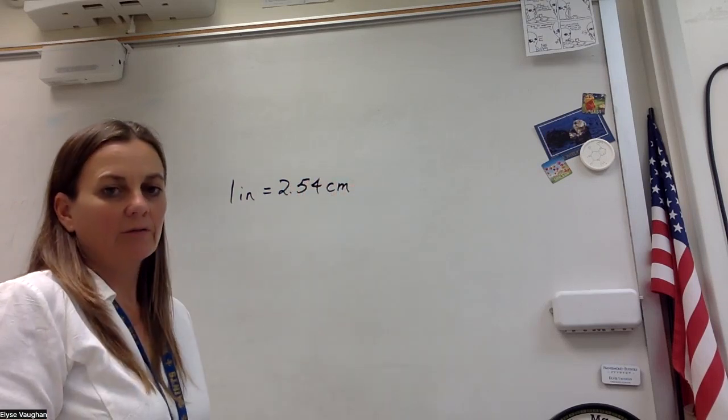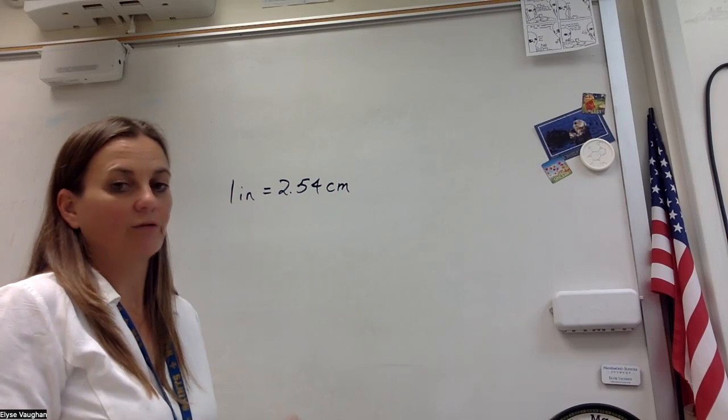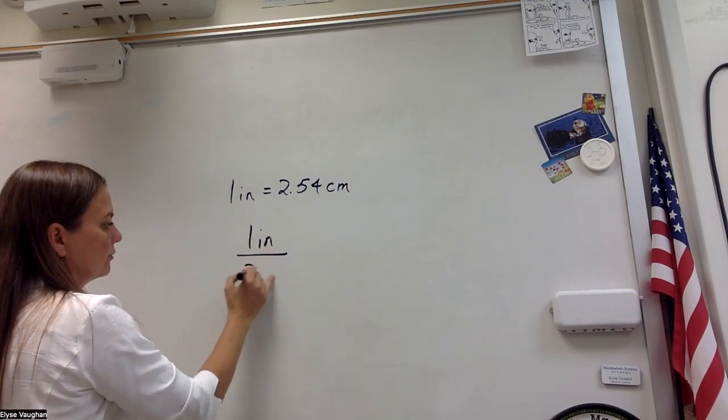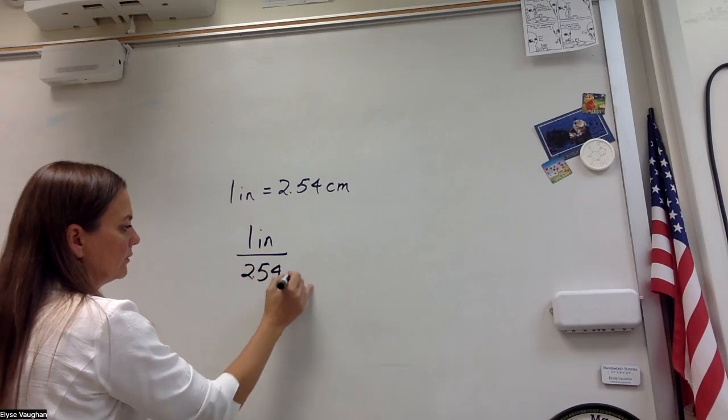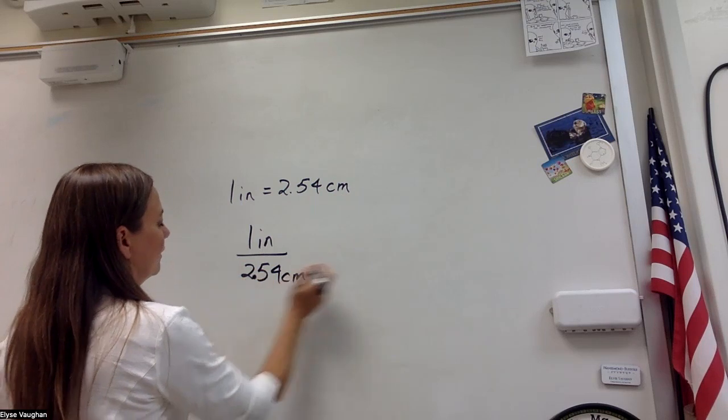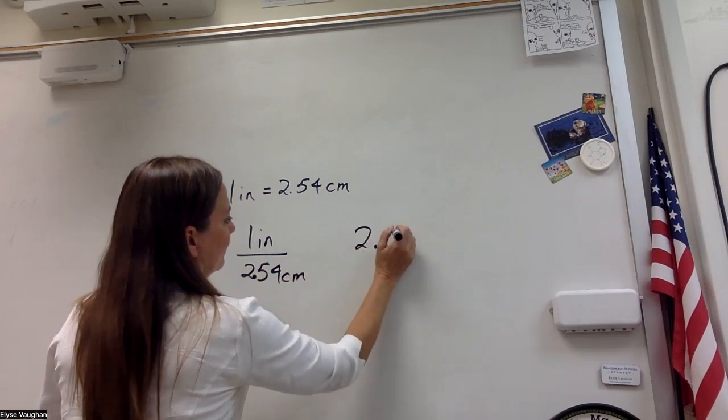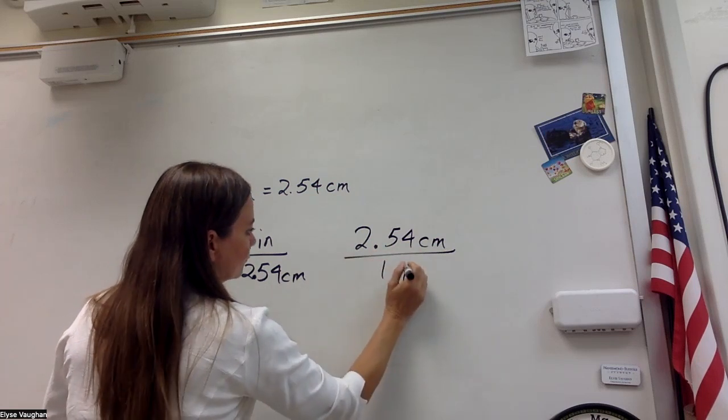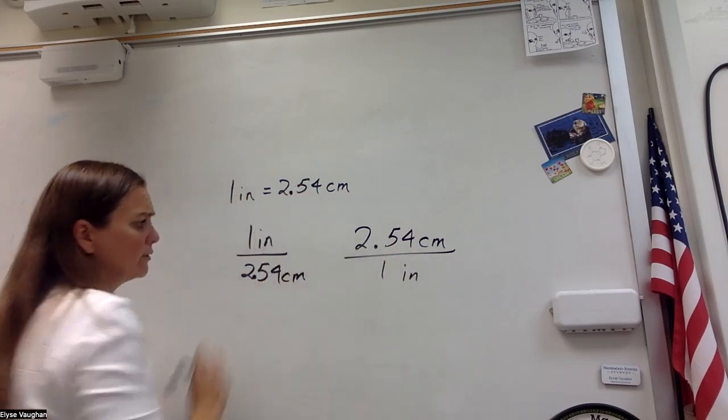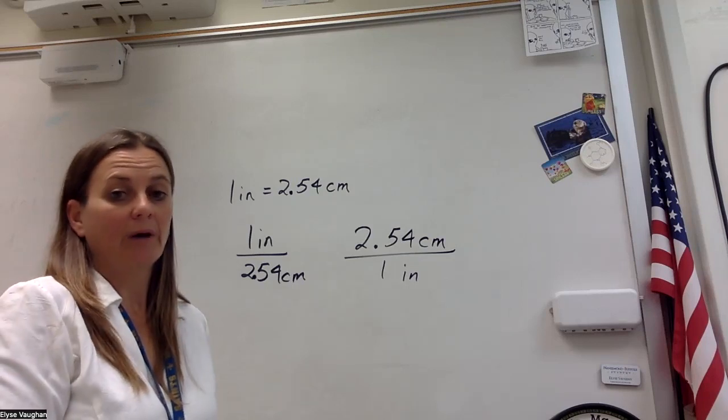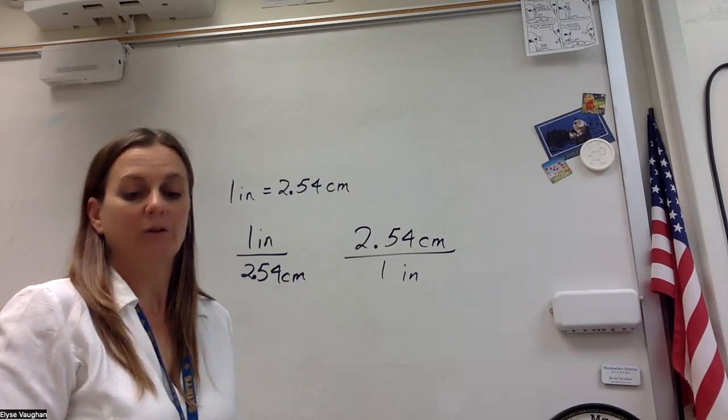And anytime we have a conversion factor, we can write it as a fraction. And so we could write this as one inch over 2.54 centimeters, or we can write it as 2.54 centimeters over one inch. And this is going to be useful for us because there will be times when we're going to need centimeters on the bottom, and there's going to be times when we need centimeters on the top.